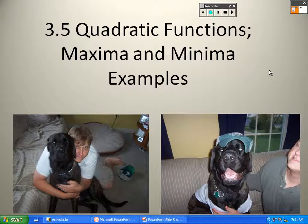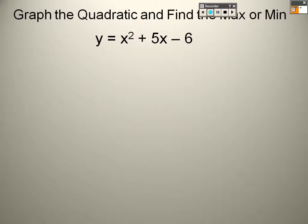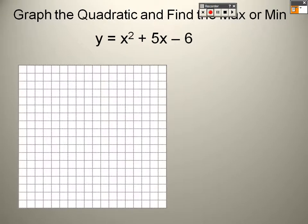Alright, so 3.5 in trig. We're just going to do some examples here to see what we've learned. We have y equals x squared plus 5x minus 6, and we just want to graph it and find the max and min.